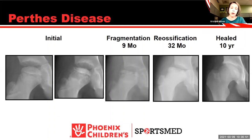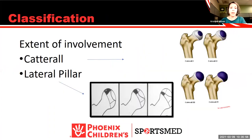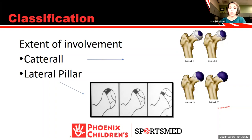The two classification systems are Catterall and the lateral pillar classification. Catterall is staged 1 through 4 based on the amount of the femoral head involved — it's important to stage during the fragmentation stage, as staging earlier leads to misclassification. The lateral pillar classification looks at the degree of lateral pillar collapse: lateral pillar A (no collapse), B (less than 50% collapse), and C (greater than 50% collapse). Best prognosis is in a child diagnosed before age 6 with lateral pillar A involvement — essentially Catterall stage 1 or 2 — where just the tip and top of the femoral head is involved.